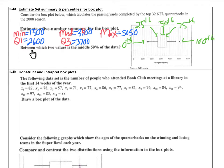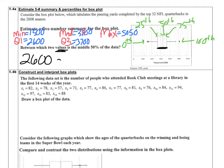The next question asks: between which two values is the middle 50% of the data? The box plot is chunked into quarters. The middle 50% sits between Q1 and Q3, so between approximately 2,600 and 3,700. If asked about the top 25%, that would be above Q3. The bottom 25% would be below Q1.